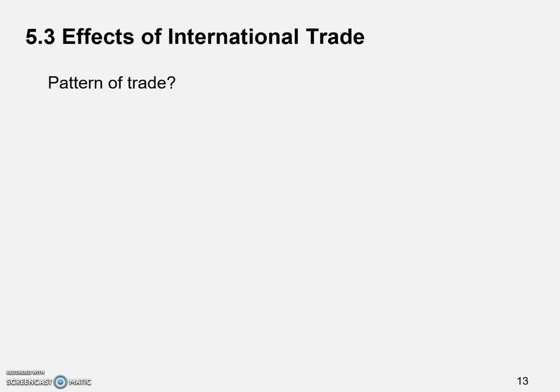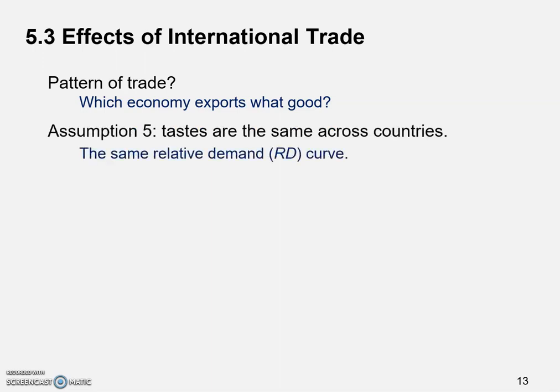The first thing we need to figure out is the pattern of trade — which economy exports what good between the two economies. To do that, we're going to make one more assumption: assumption number five. Tastes are the same across countries. We did the same thing in the previous chapter with the specific factor model. This helps us simplify our analysis.